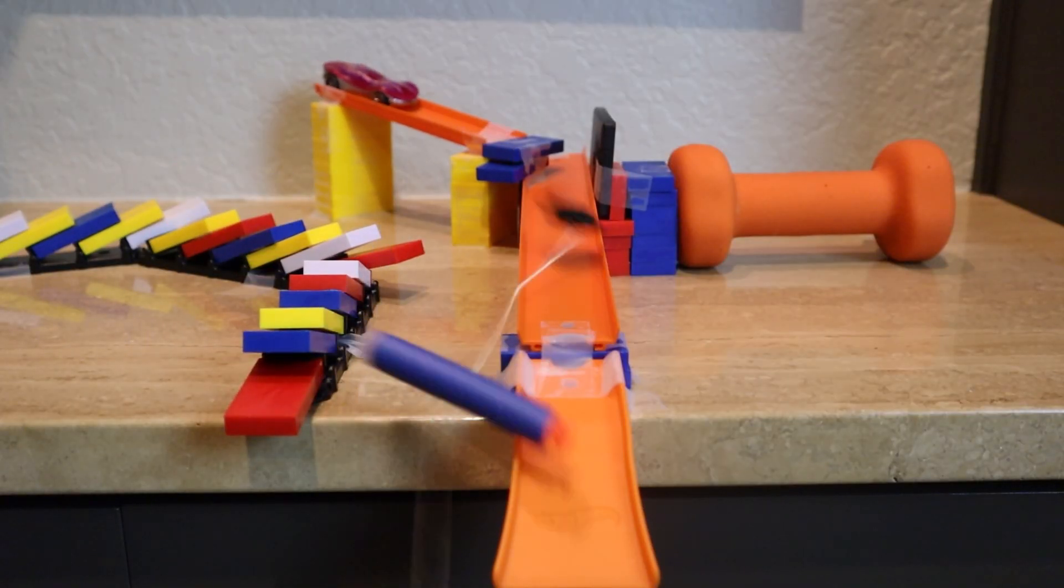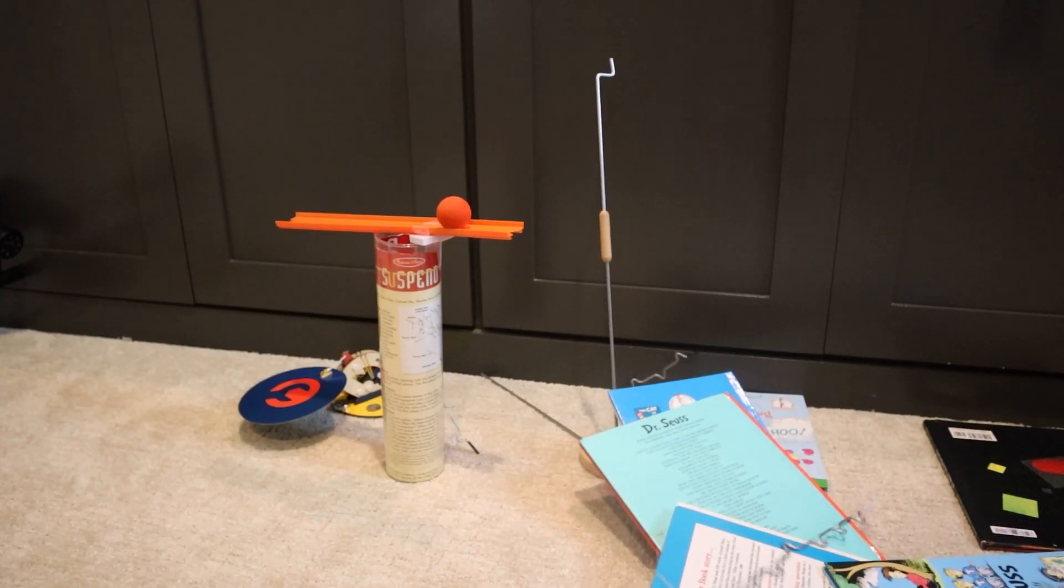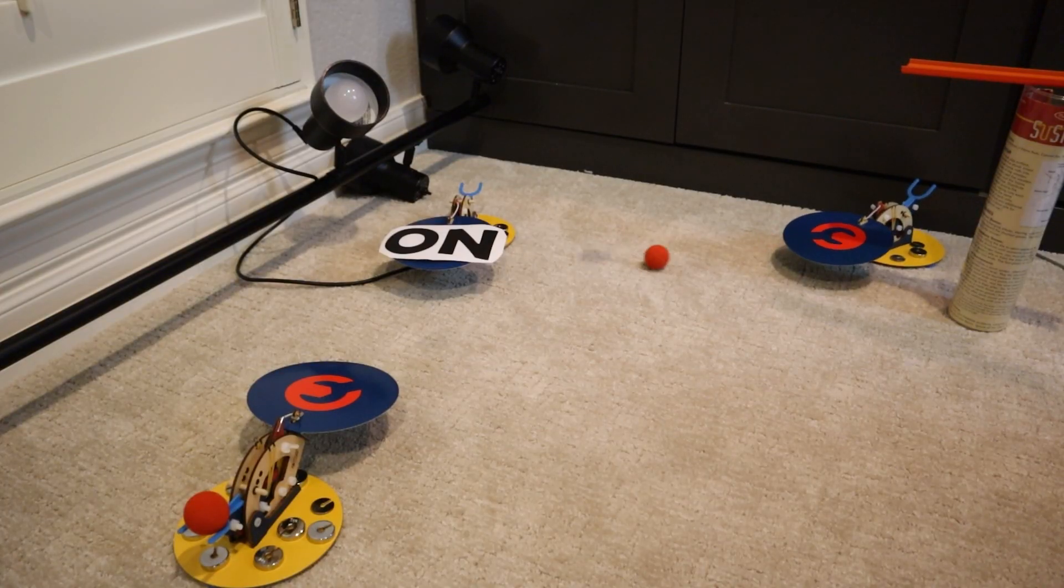The books fall, pulling another string. The string pulls a lever that releases a ball. The ping-pong ball flies through the air and turns on the light.